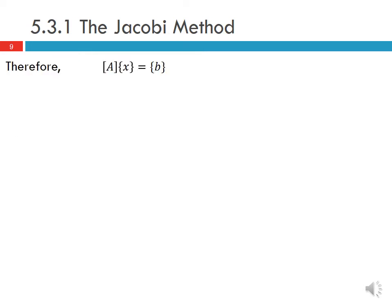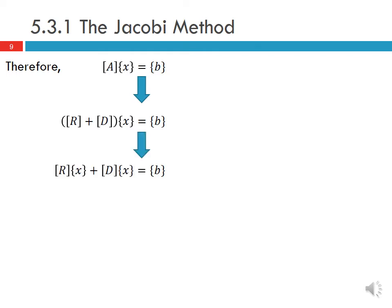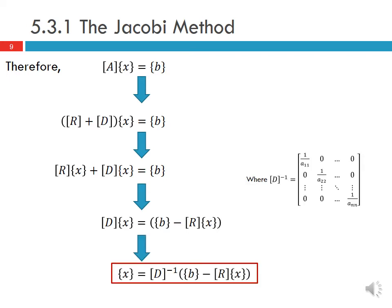With the Jacobi method we start with our system Ax equals b and write A as the sum of R plus D, so the system becomes Rx plus Dx equals b. We bring Rx to the other side of the equation, and since D can be easily inverted, we solve to get x equals D-inverse times (b minus Rx), where D-inverse has the reciprocal diagonal entries shown here. This is the form of the Jacobi method, and then we iterate to find our solution x.